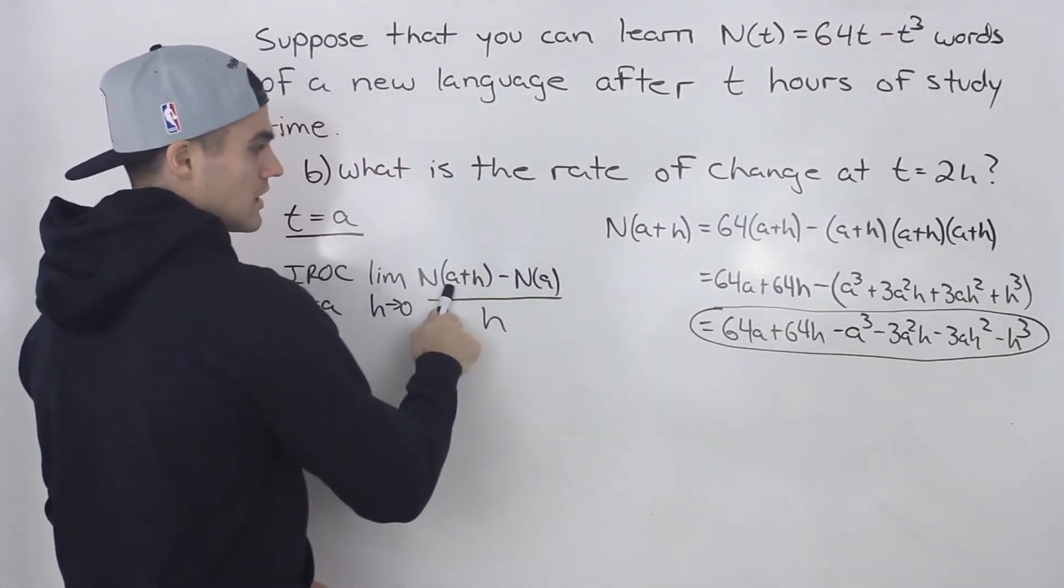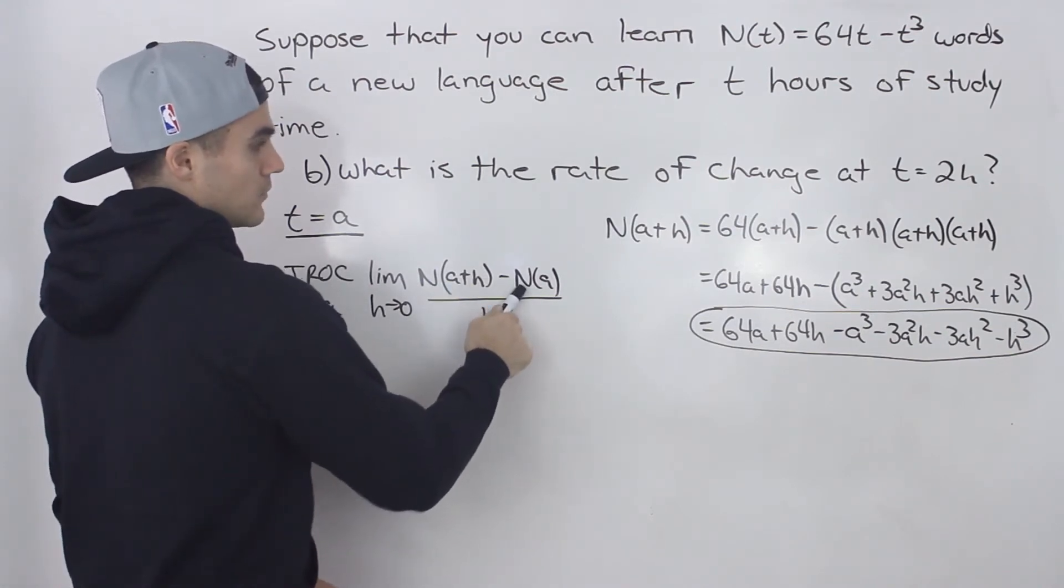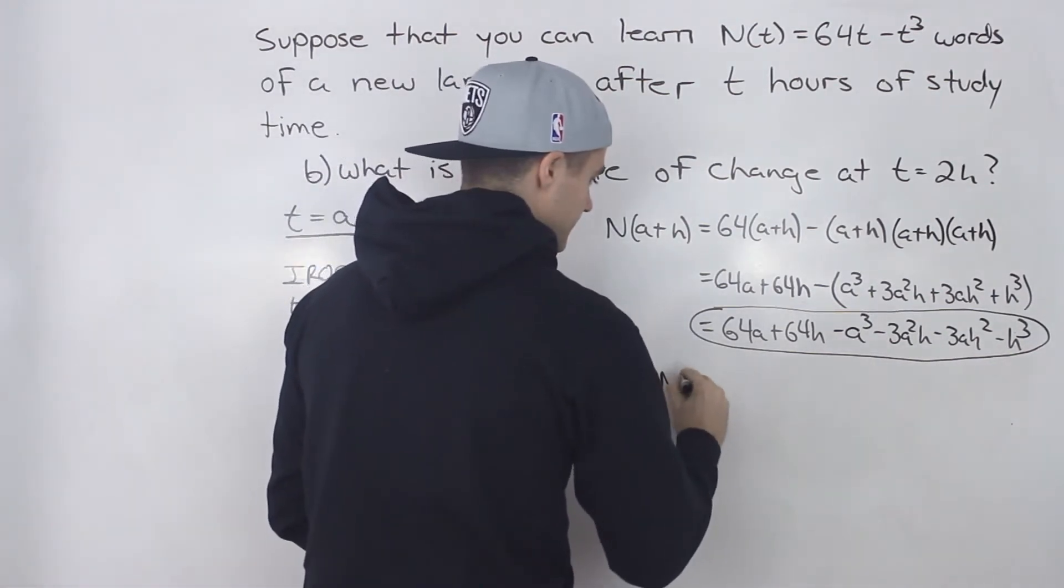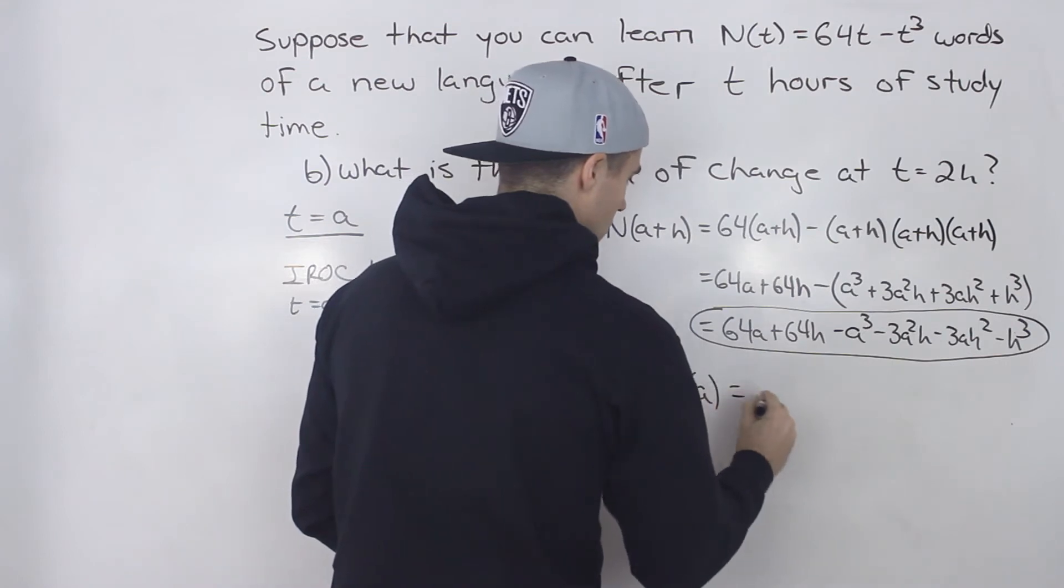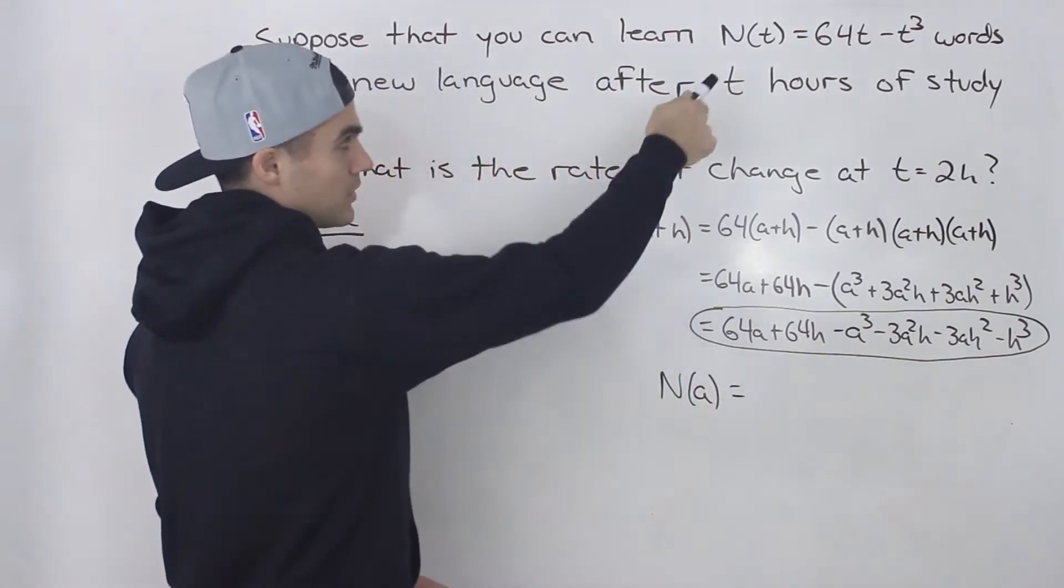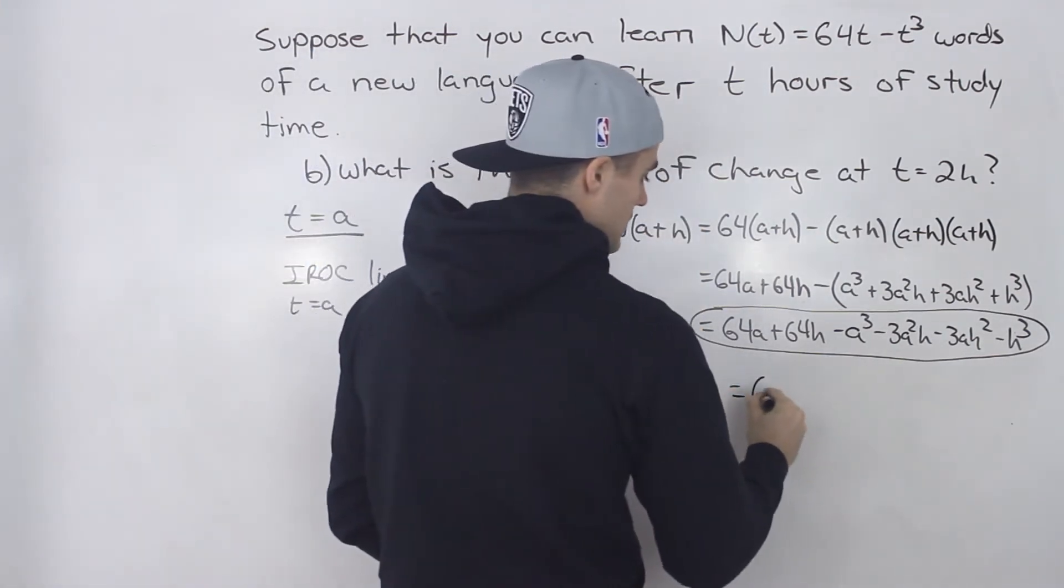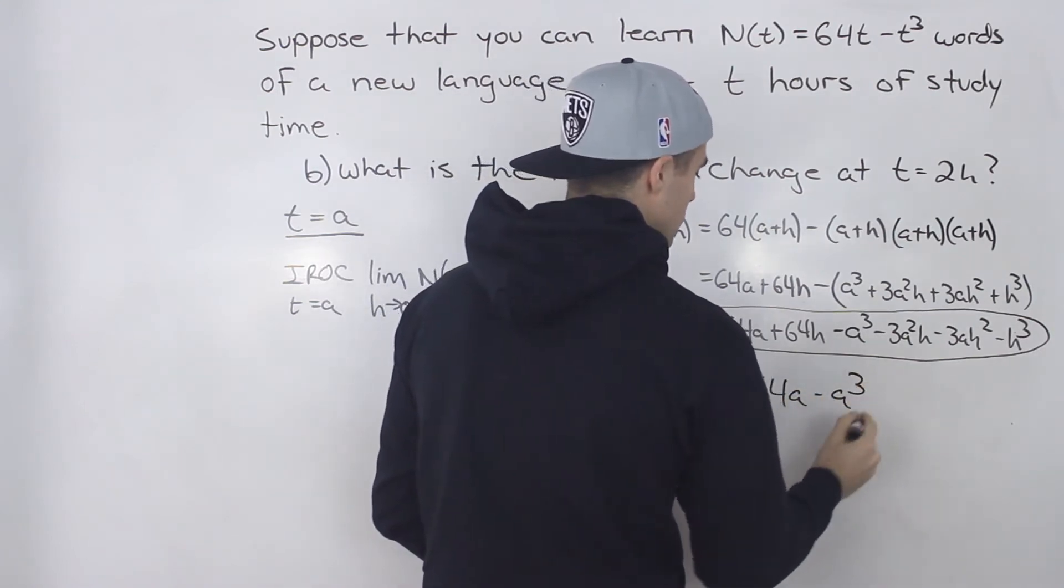So we're going to plug that expression in here. Let's find what N of a is first. So N of a, we just simply plug in a for the t value. So we got 64a minus a cubed.